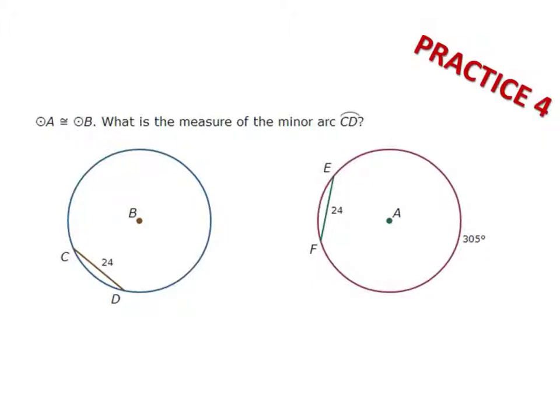Practice 4: Circle A is congruent to circle B. What is the measure of minor arc CD?